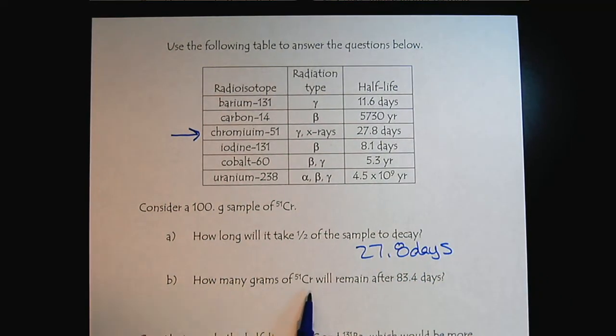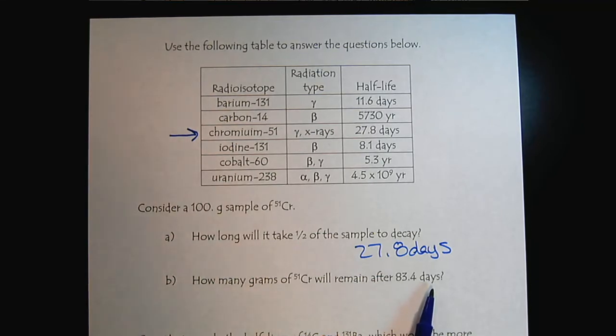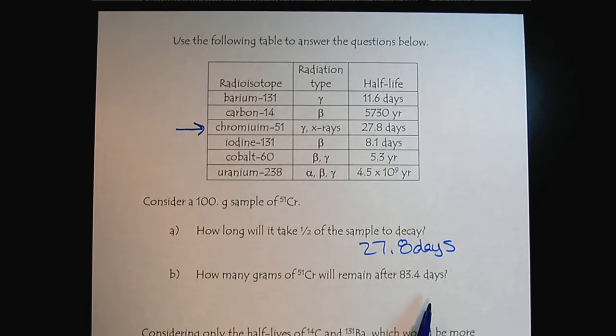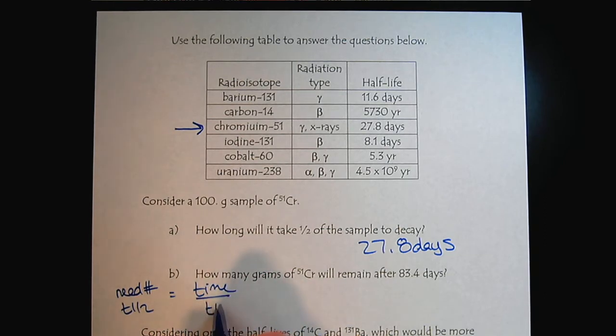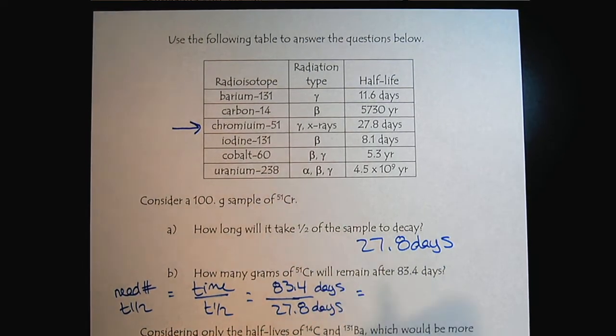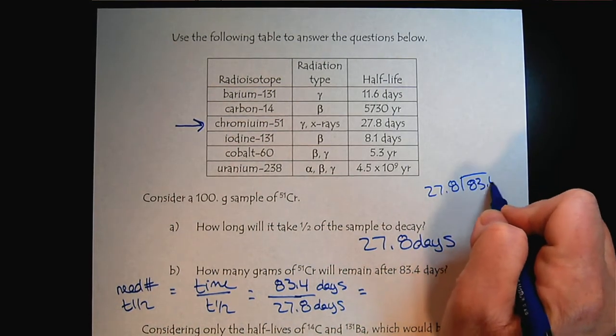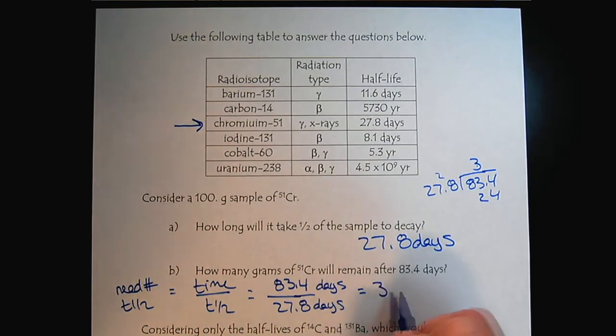How many grams of chromium 51 will remain after 83.4 days? So the trick here is that we have to figure out how many half-lives. So I will always give you whole number half-lives. So we need the number of half-lives. So we take the time and divide it by the half-life. So if we have 83.4 and we divide that by 27.8 days, then I'm guessing this should come out. So it's got to be three, I would think.